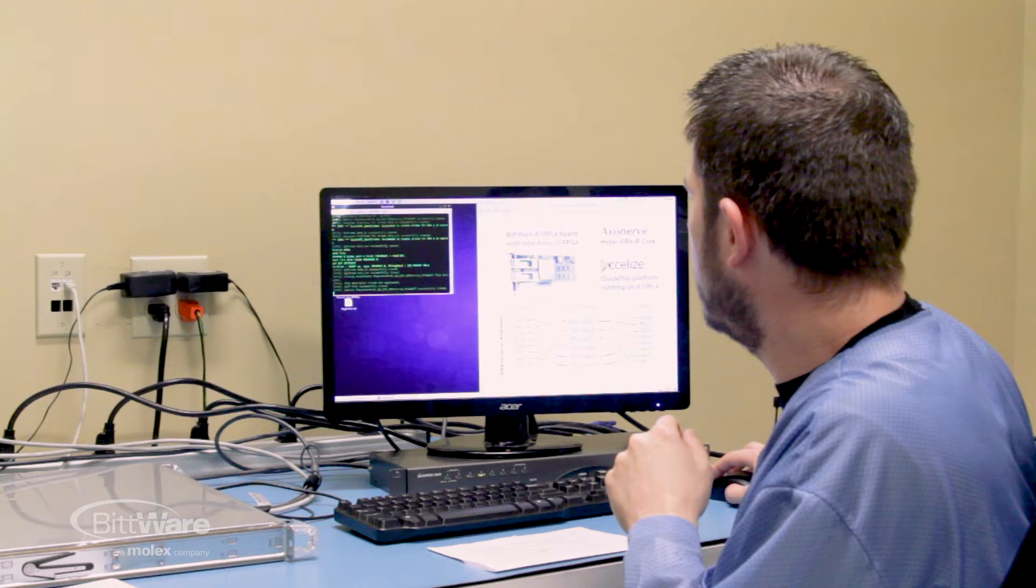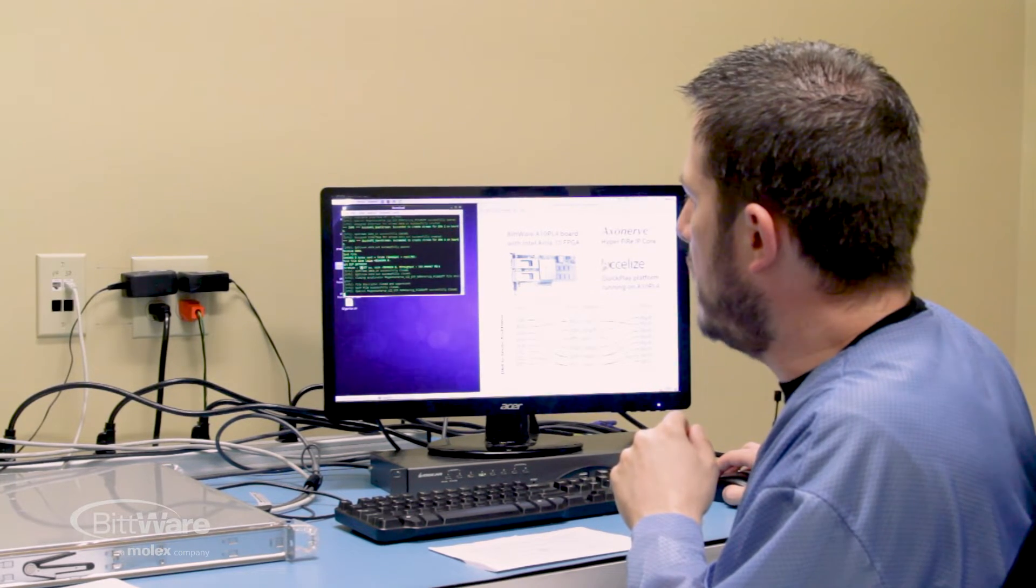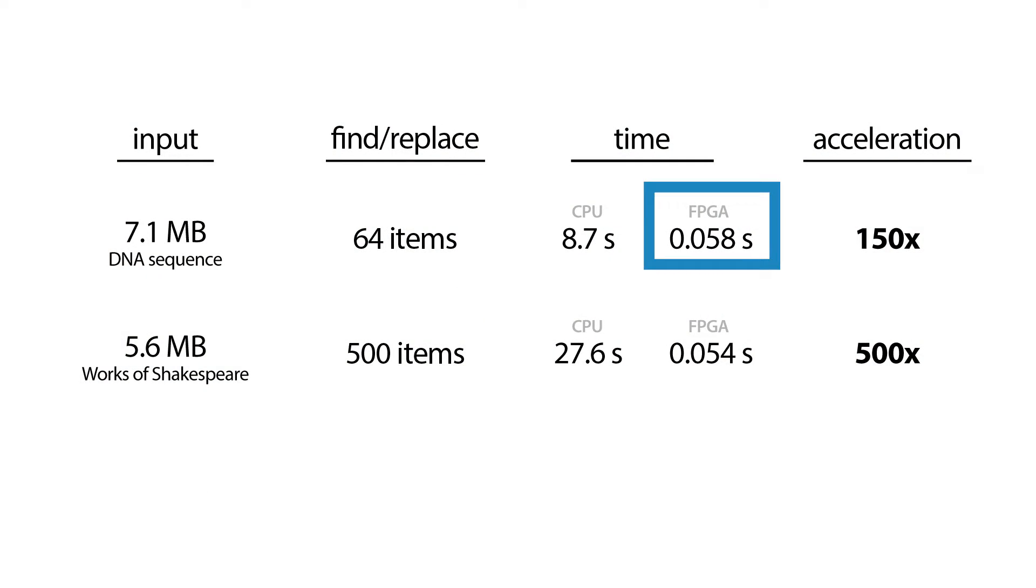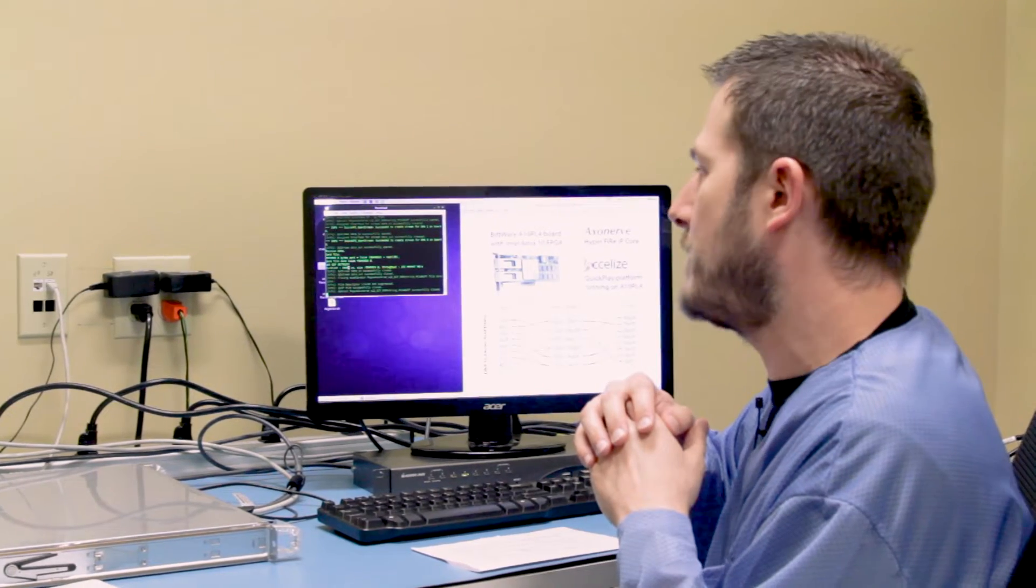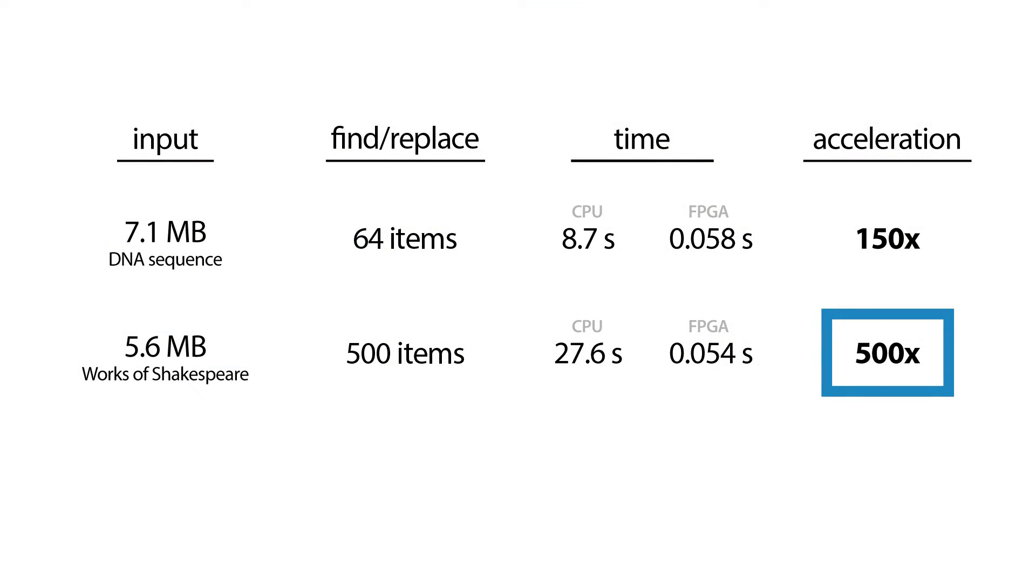And again, it's done. So this time on the FPGA, it took actually less time than before. So it was 58 milliseconds before. Now it's running at 54 milliseconds. But essentially the same amount of time. That reduction is probably from the 7 megabytes to 5 megabytes. But again, we're talking about hundreds of times faster than the CPU.